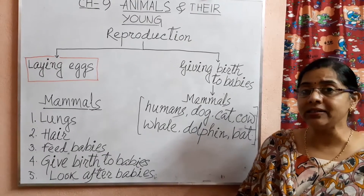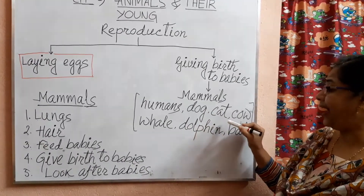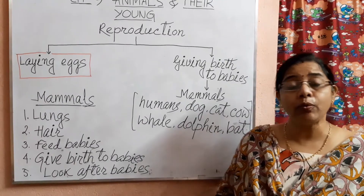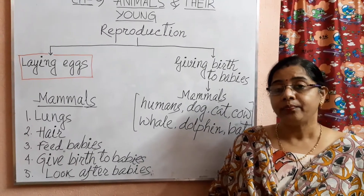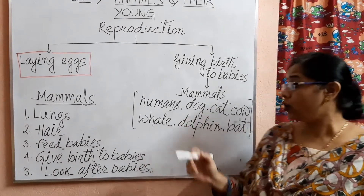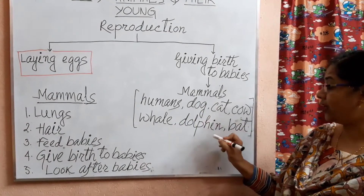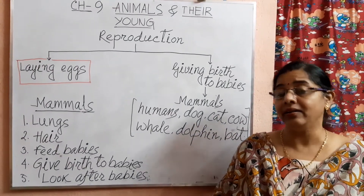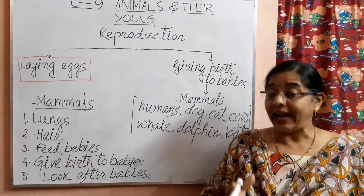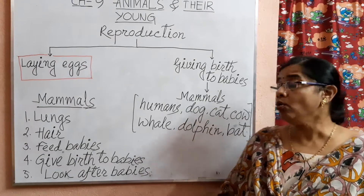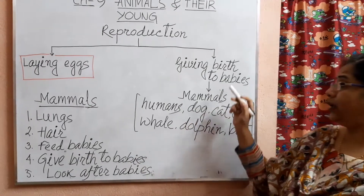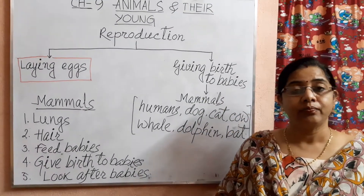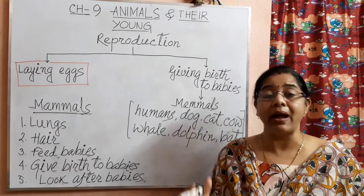Human beings, dogs, cats, cow, lion, tiger, hippopotamus, giraffe, zebra, whales, dolphins, bat — these are animals who directly produce their babies or young ones. They are known as mammals.